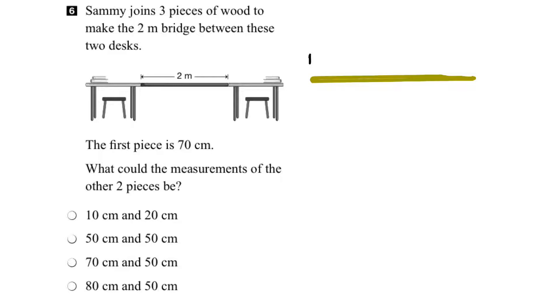Now we know that the total length of the bridge here, that wooden bridge, is two meters. That's what they tell us. We also know that the first piece is 70 centimeters long, but we're given the total length in meters. So what we have to do is see if we can match these units up somehow.